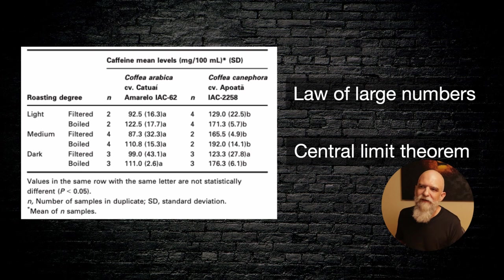So whenever you can get more samples, do so because that gets your sample mean closer to the population. And then the central limit theorem is related to the law of large numbers. It gets a little bit more statistic-y. But anyway, what these two theories tell us is that we want as many samples as possible to get us closer to the average of the population.